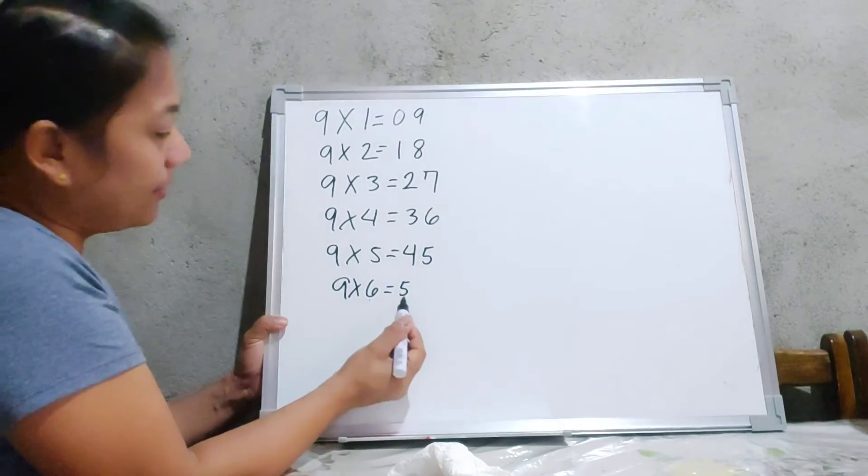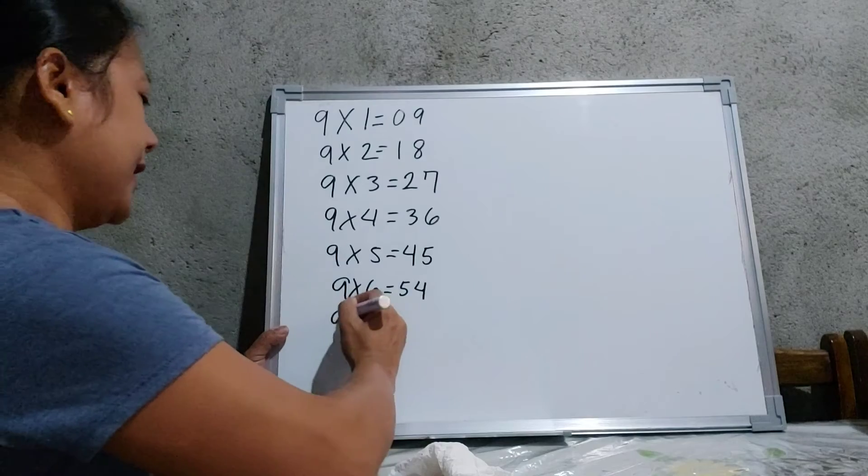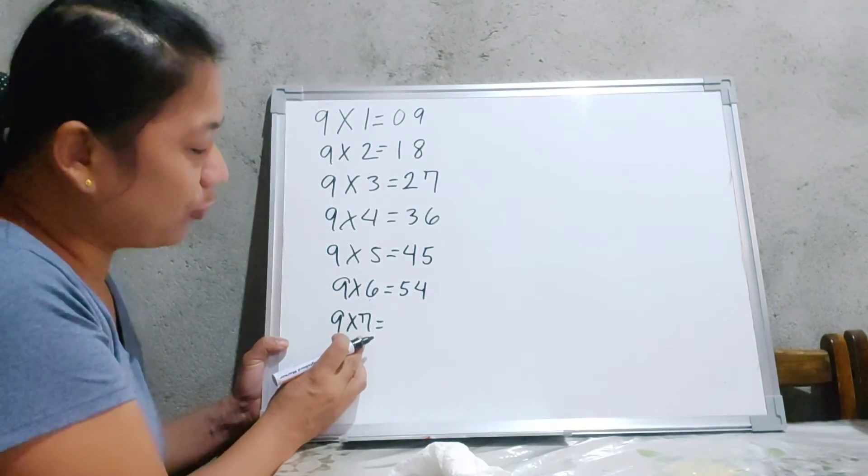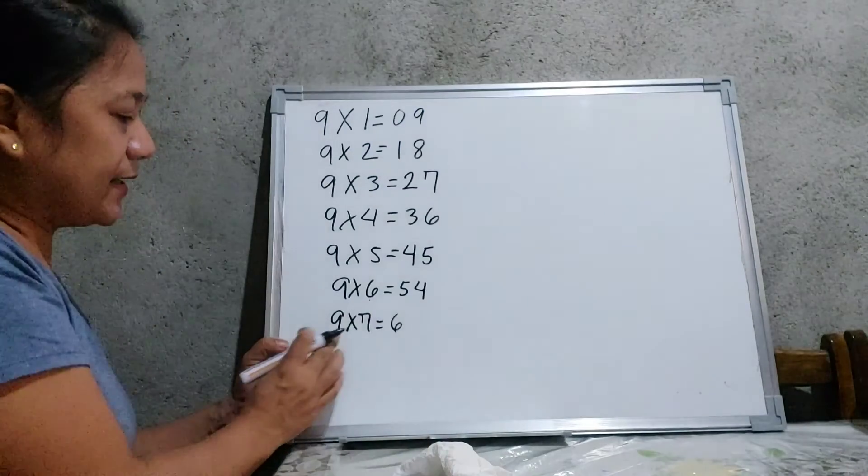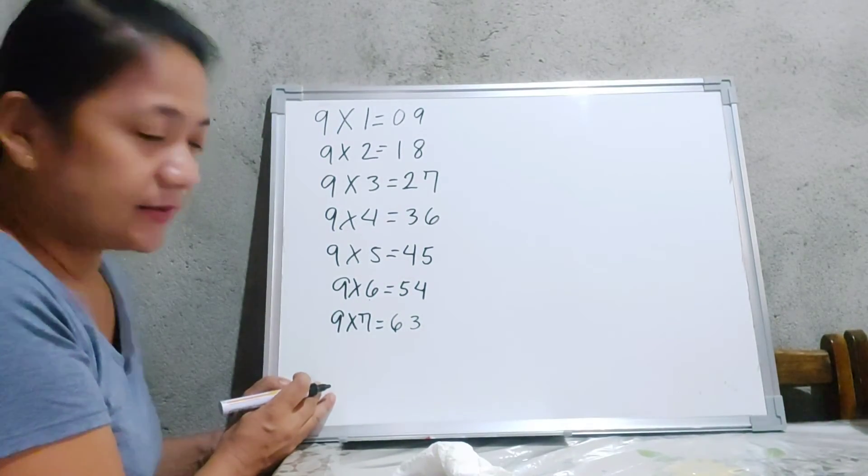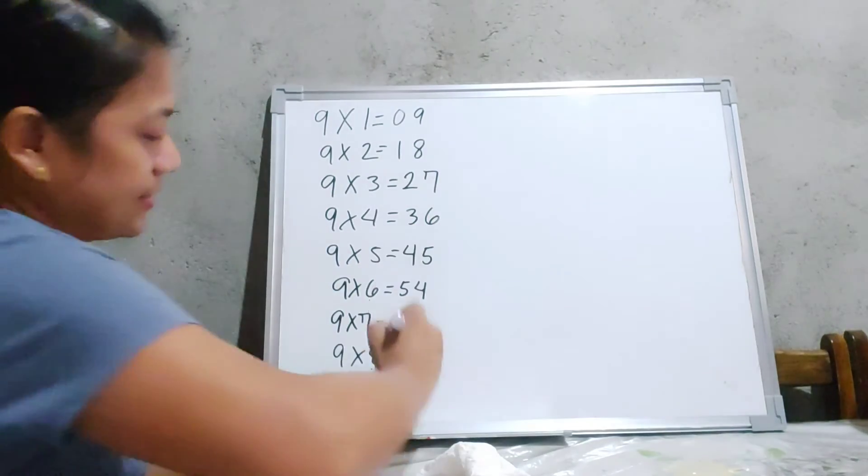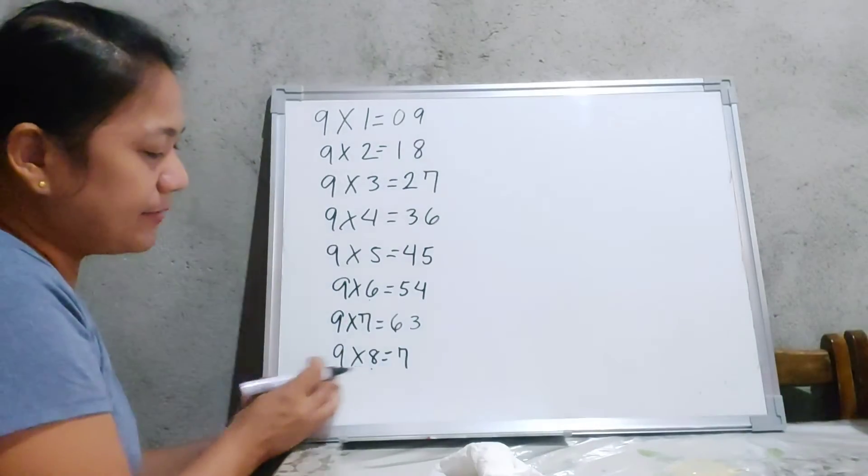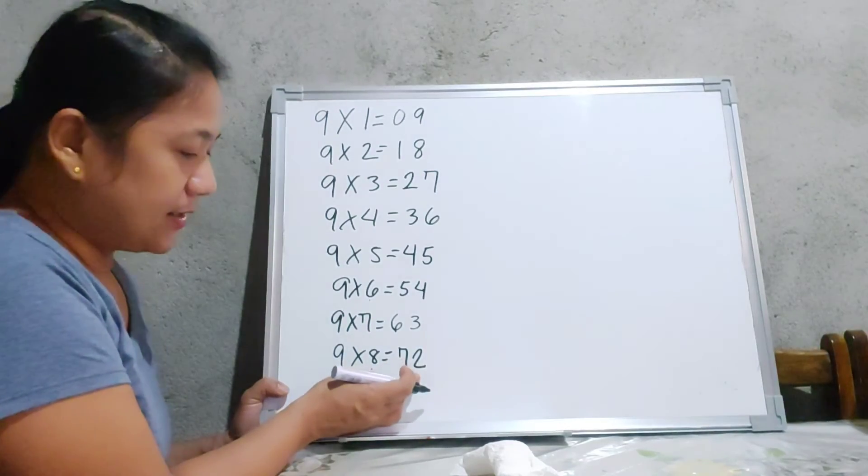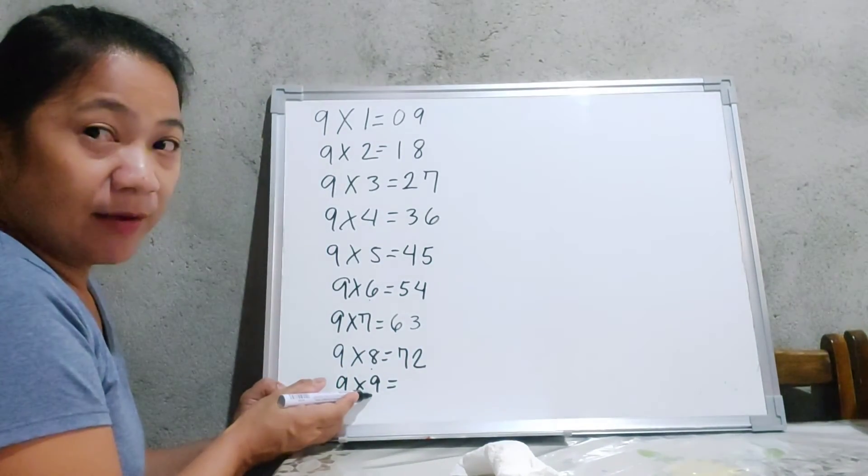So again, 9 times 6 is 5. And again, subtract it into 9. 9 minus 5 is equal to 4. Then 9 times 7 is equal to... So again, number before 7 is 6. And 9 minus 6 is equal to 3. So the answer is 63. And 9 times 8 is equal to 7. And 9 minus 7 is 2. So 9 times 8 is equal to 72. And 9 times 9 is equal to 8.